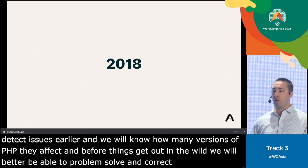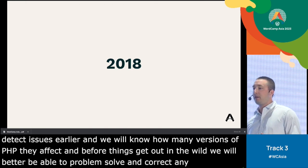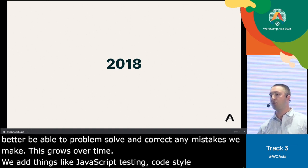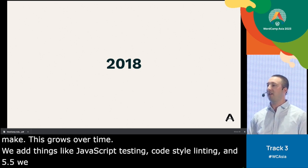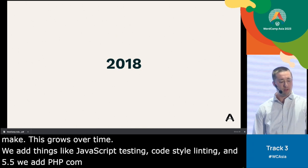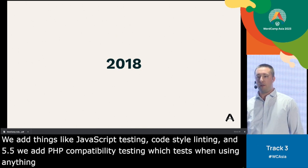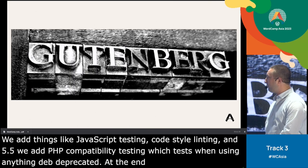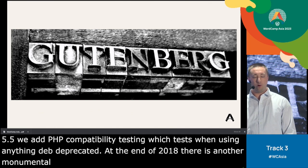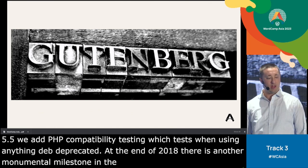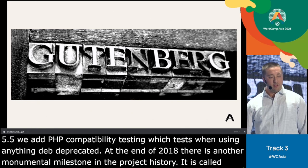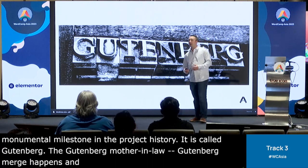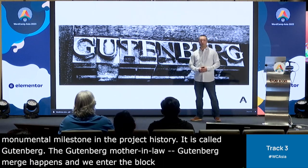This file continues to grow over time. We add things like JavaScript testing and code style linting. In 5.5, we add PHP compatibility testing, which tests that we're not using anything deprecated in certain versions of PHP. And at the end of 2018, there's another monumental milestone — Gutenberg. Before WordPress 5.0, the Guten merge happens and we enter into the block era.